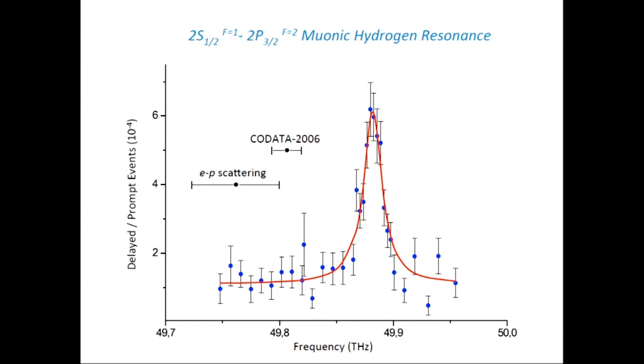The result was unexpected. There were predictions where the Lamb shift should occur if we believe in the electron-proton scattering experiments at accelerators for the proton size. Or, if you believe in the official proton size value from the official adjustment of the fundamental constants and the real resonance was outside.